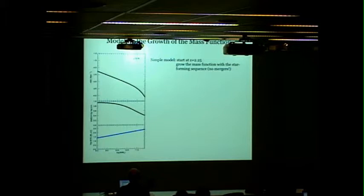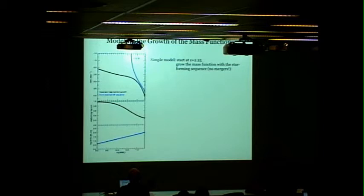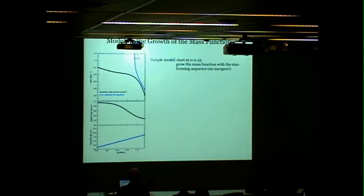Here's the simple model with no mergers starting from redshift 2.25. The black line is observed, the blue is grown with the star forming sequence. You can see there's immediate problems. The mass function grown with the observed star forming sequence blows up. It grows way too quickly. The star forming sequence extrapolated to low masses can't hold. There must be something wrong.